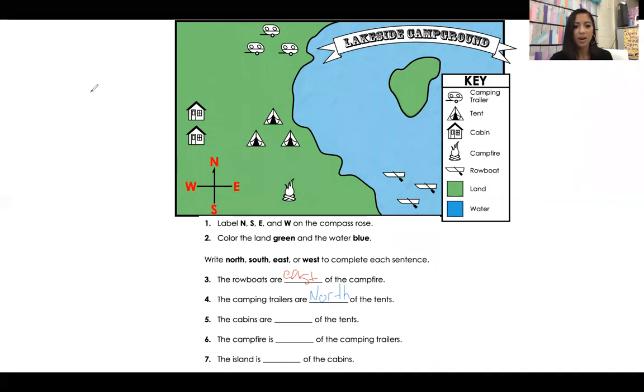Next one. The cabins are blank of the tents. Here are the cabins. The cabins are north of the tents, east of the tents, south of the tents, or west of the tents. Here are the tents. The cabins are west of the tents.